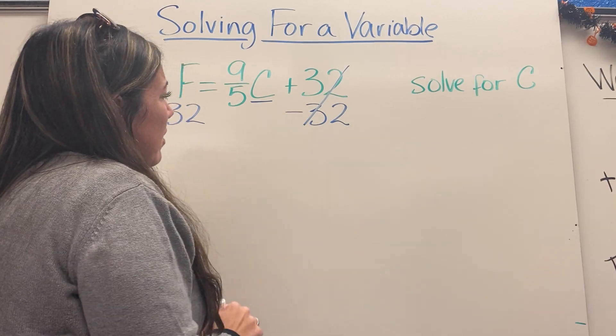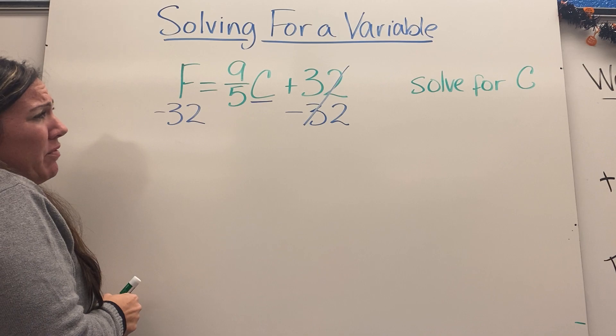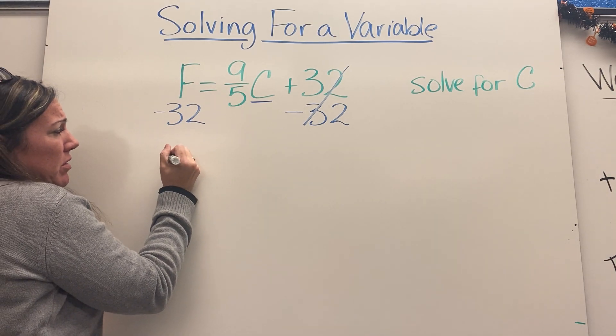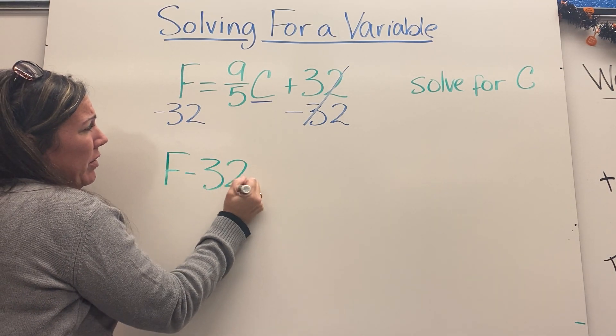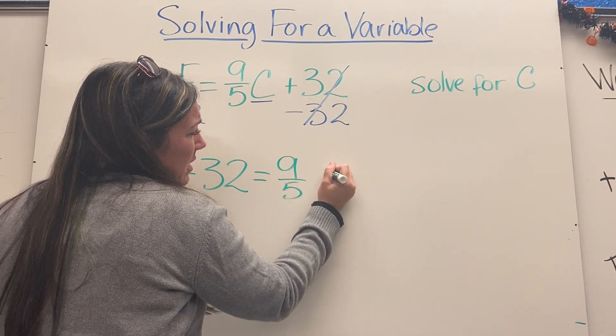This will leave here, so on the left I have F minus 32, and on the right that equals nine-fifths times C.